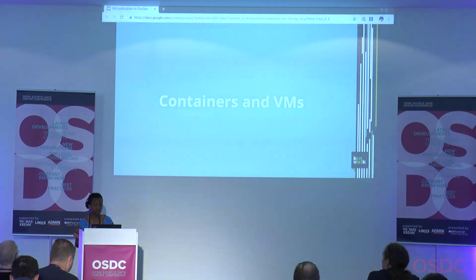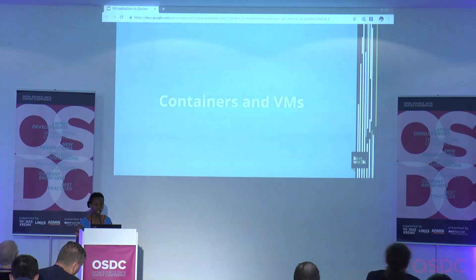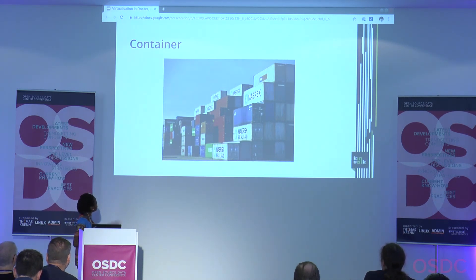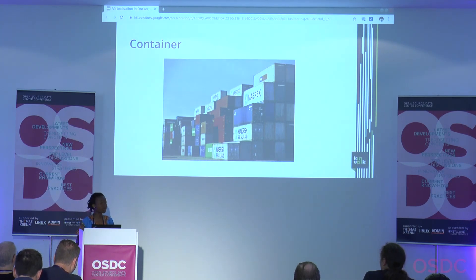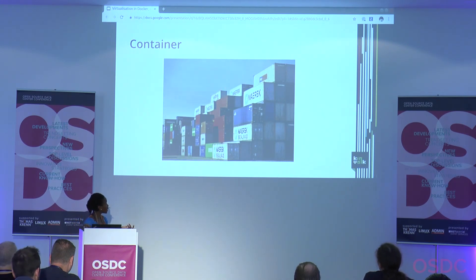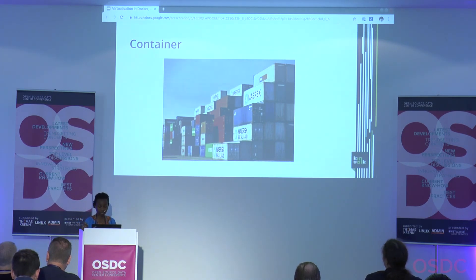I will talk a little bit about the level of virtualization that happens in containers and virtual machines, as well as some terminologies I will be using in this presentation. In a container, what we have is OS-level virtualization, which is also known as containerization. The virtualization level here happens in the operating system — it's a feature in the OS that allows the existence of multiple isolated user space instances.